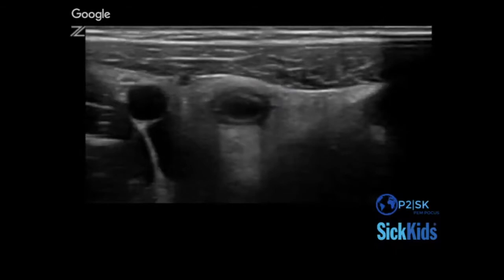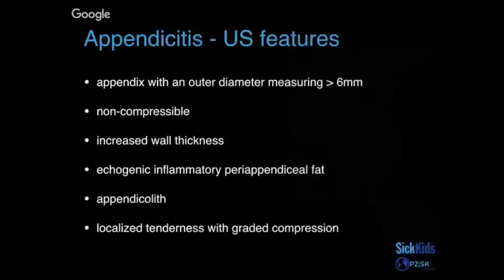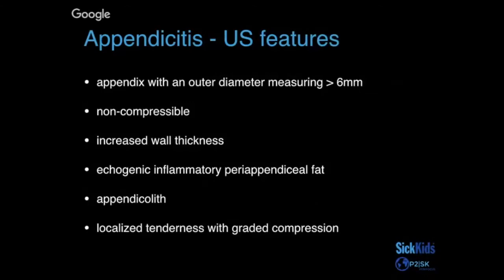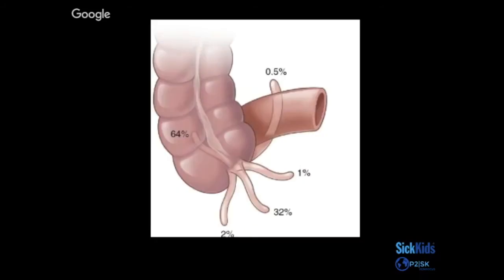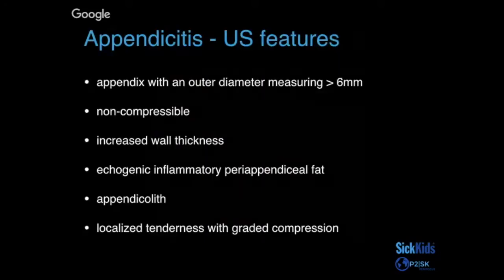Here we see the same appendicitis in transverse view — again, measuring outer wall to outer wall diameter. Features suggestive of appendicitis include outer wall diameter greater than six millimeters, but this is an area of contention. Normal appendices can be slightly above six millimeters, and abnormal ones can be less than seven. So other features become important: is it compressible? Is there increased wall thickness? Is there echogenic inflammatory para-appendiceal fat? Do you see an appendicolith? And is there localized tenderness with graded compression?